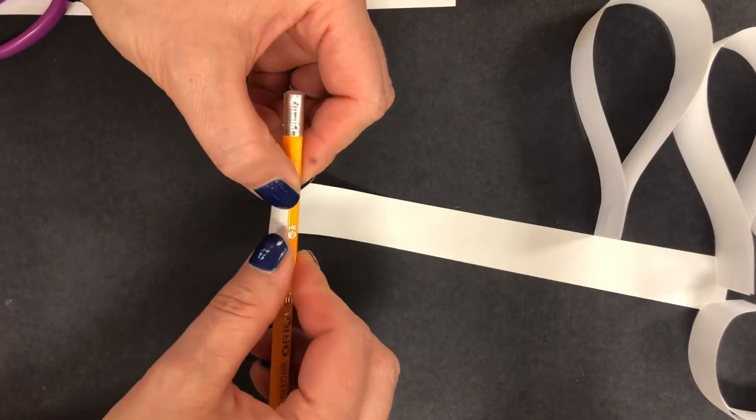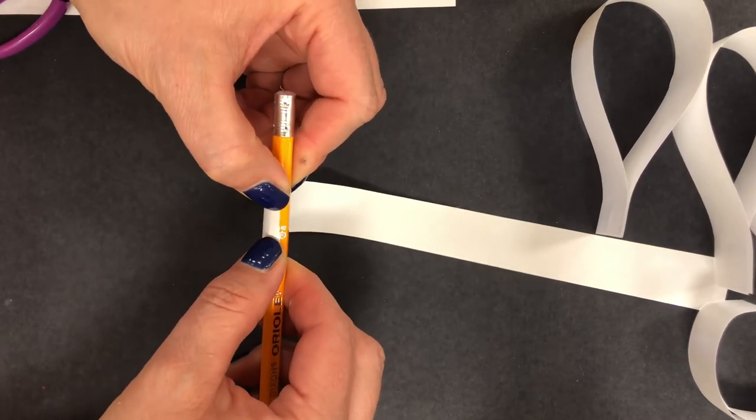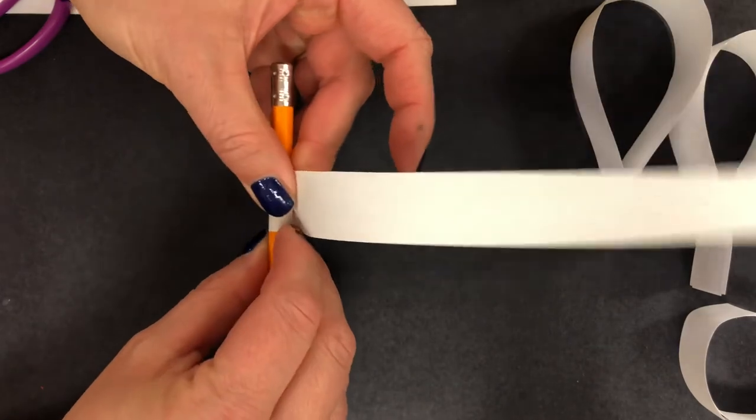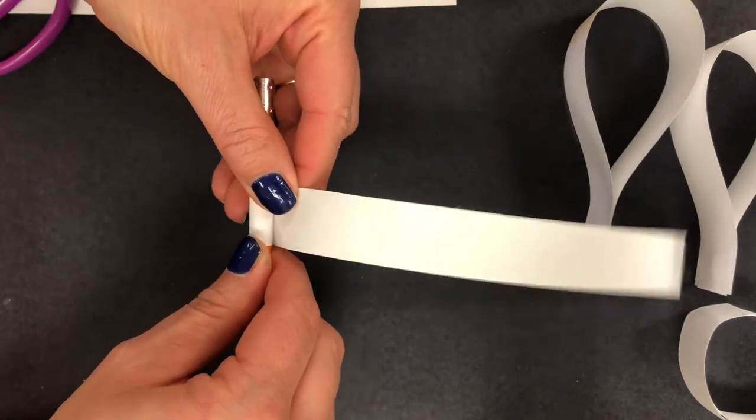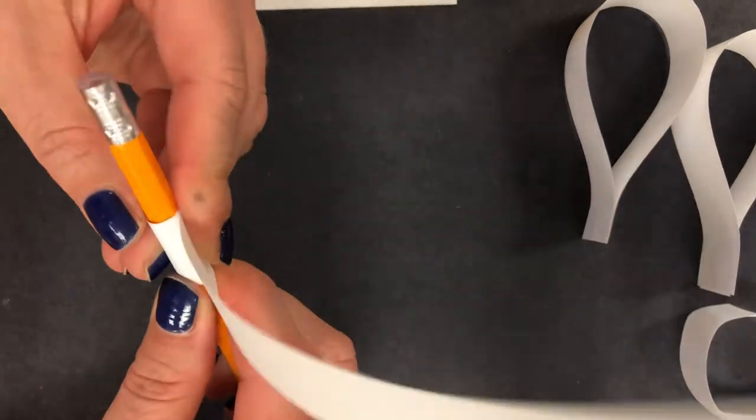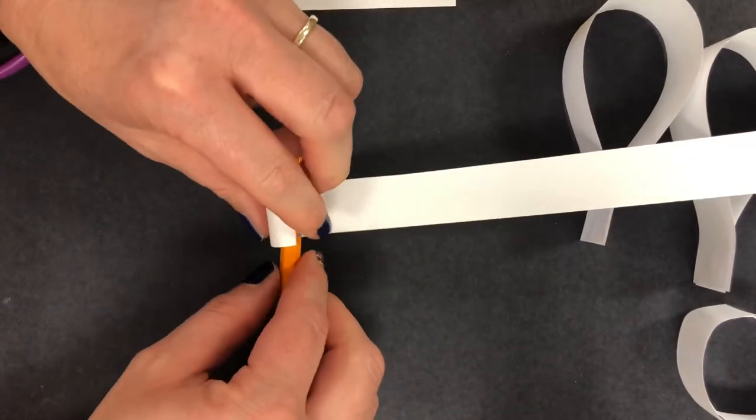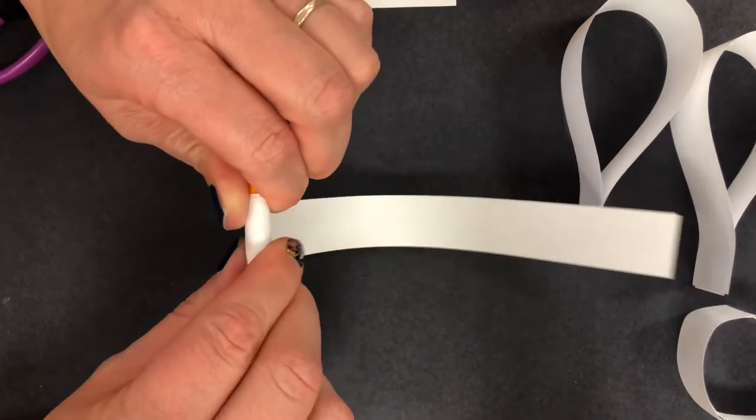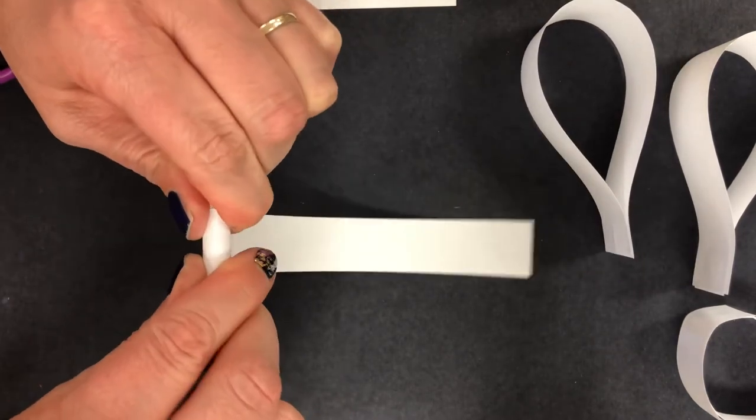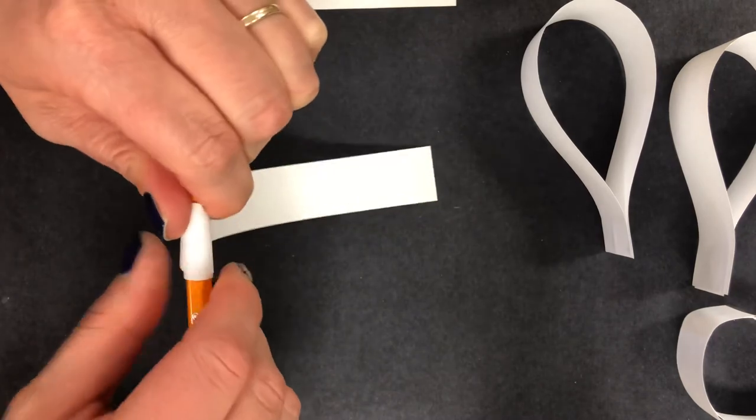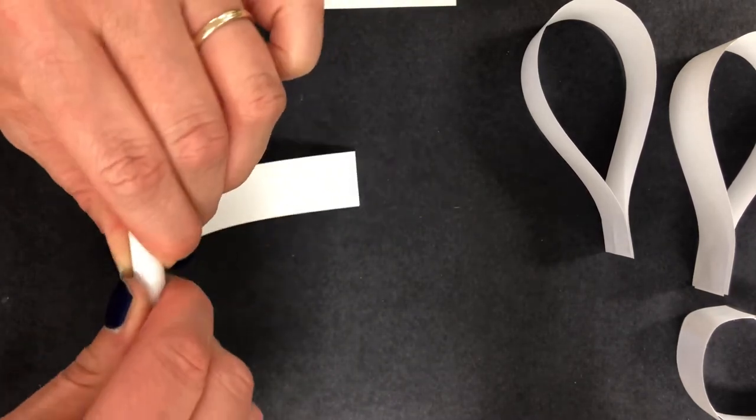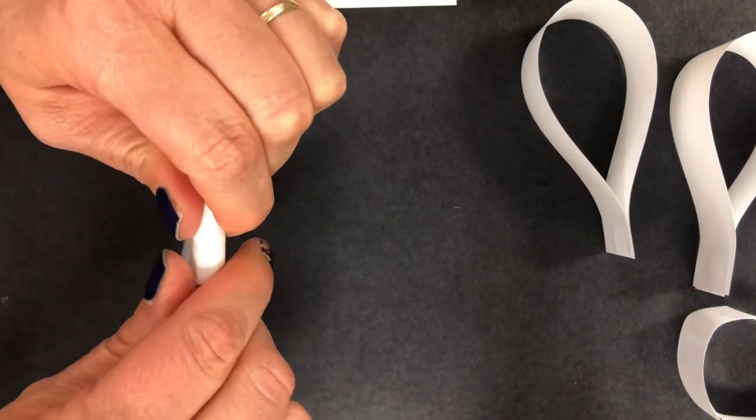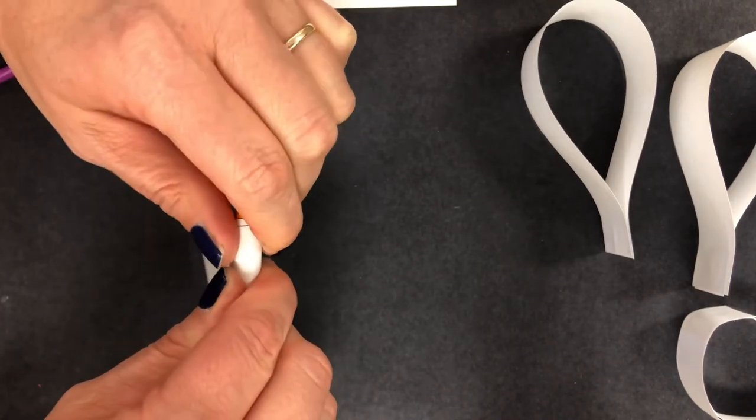I'm going to start to wrap and roll, and I'm pulling it really tight as I'm doing it. Oops, I pulled it too tight, that's okay. If it comes off just stick it back on the pencil and roll it up. Notice I'm going a little slow so that I can make sure it's nice and tight. Getting to the end, almost there.